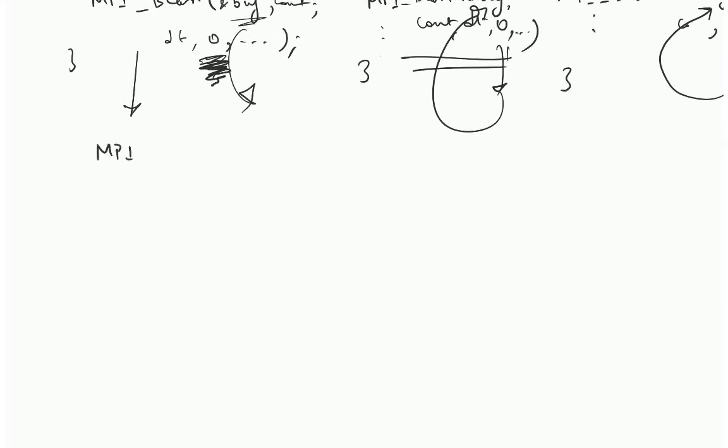The next call is MPI scatter. What are the parameters of MPI scatter?